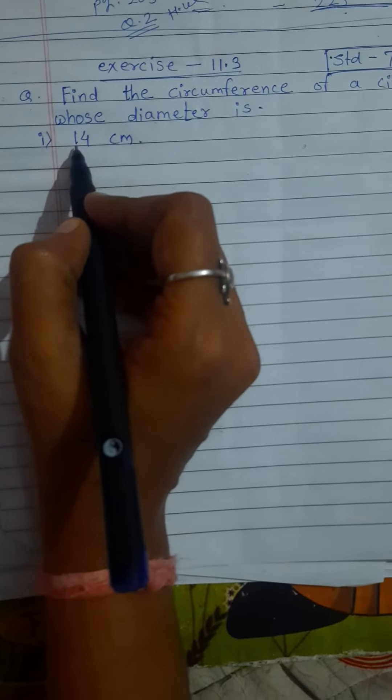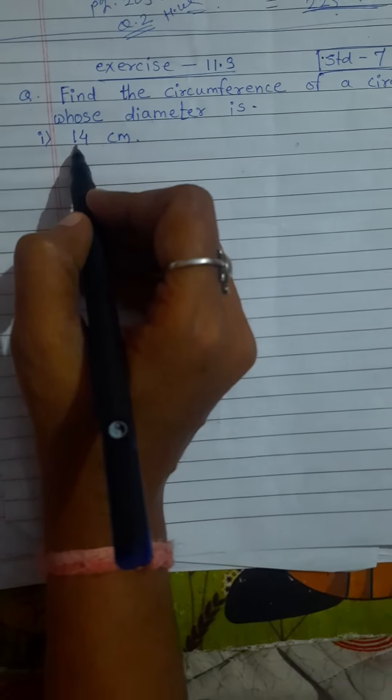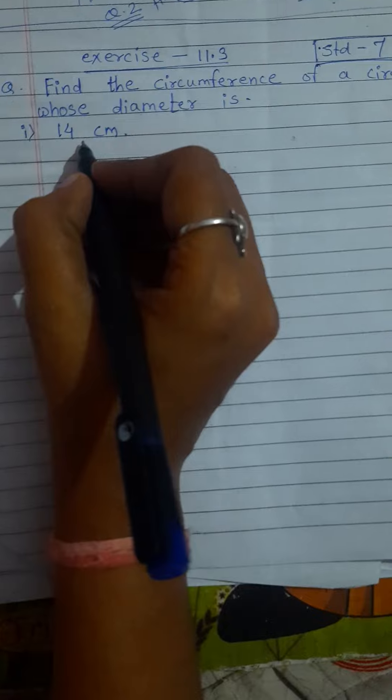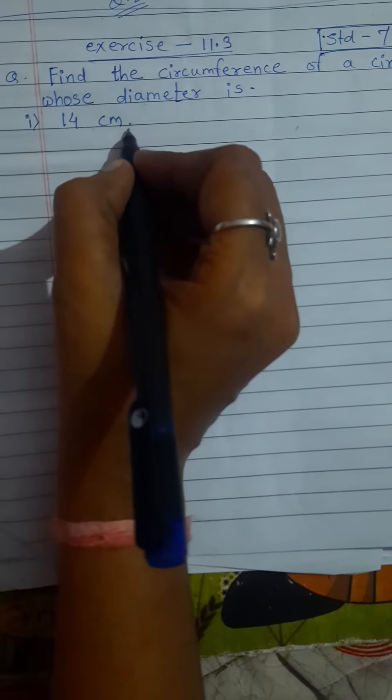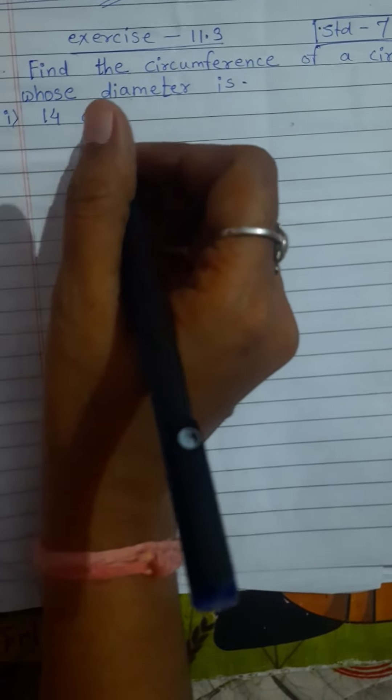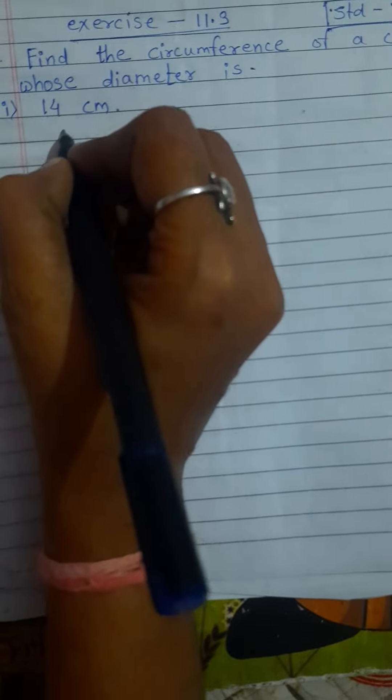They give us diameter of circle, so we just find the circumference of circle. First they give us diameter of circle 14 cm. So first we write here the structure, circumference of circle.